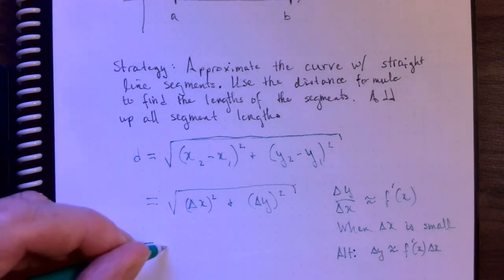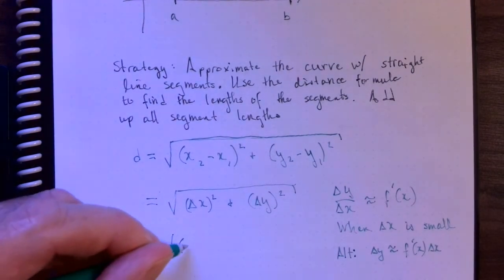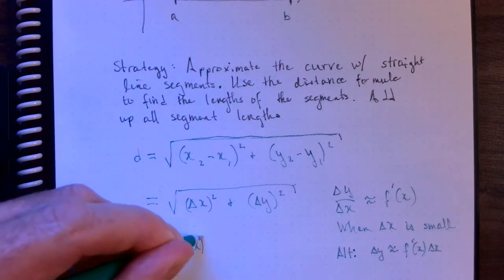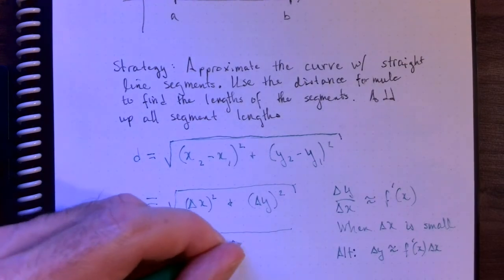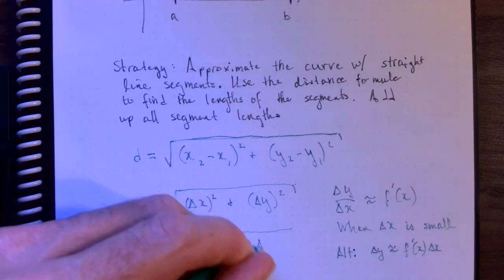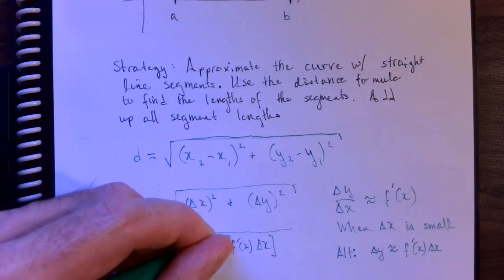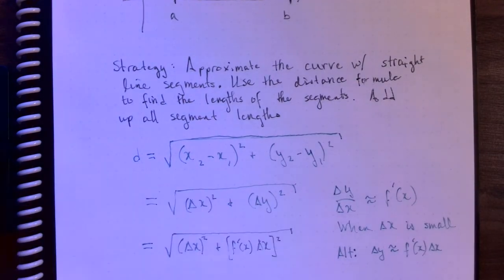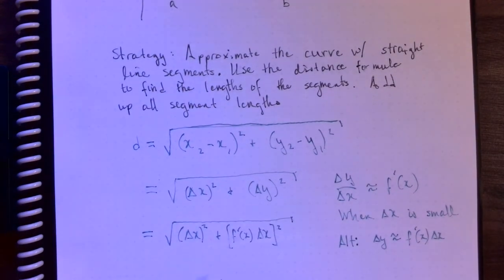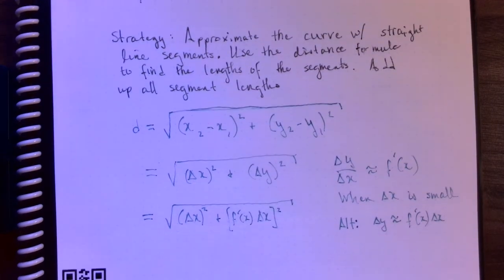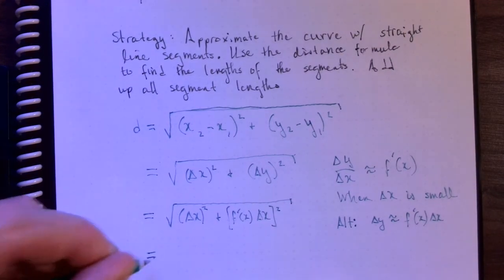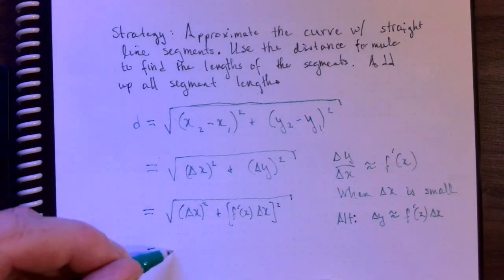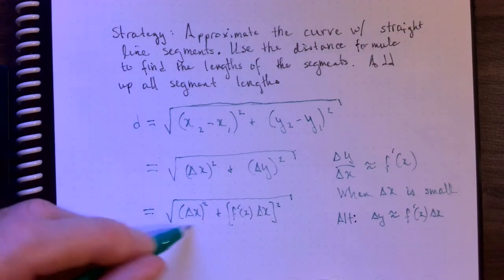So in other words, I could replace the delta y in that expression with f prime of x delta x. Now, you'll notice each term has a delta x.